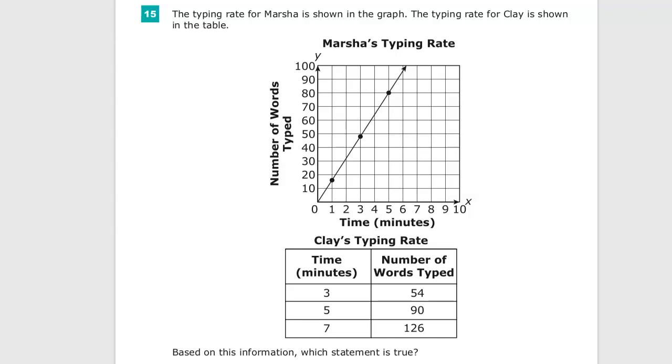This is the grade 8 math practice test for TNReady, question number 15. The question says the typing rate for Marsha is shown in the graph. The typing rate for Clay is shown in the table, and they give you this information about Marsha.